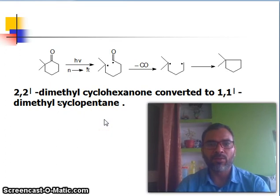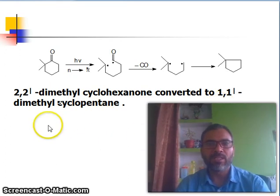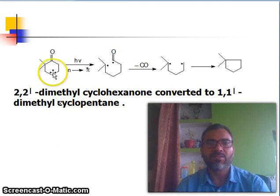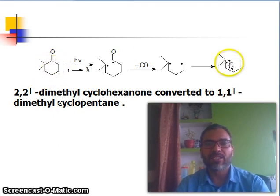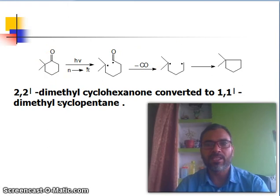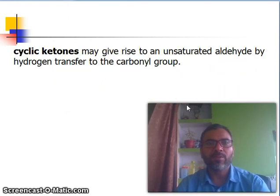So 2,2'-dimethyl cyclohexanone is converted to 1,1'-dimethyl cyclopentane. You can see this is the six-membered ring and this is the five-membered ring. The CO group is present in the starting material but absent in the product.